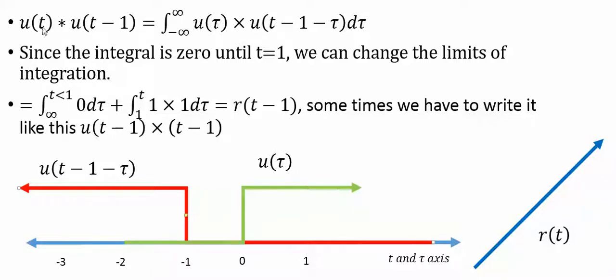Let's do the convolution of a ramp with a delayed ramp. So here's the convolution integral. We've got u(t) converted to u(τ) and u(t-1) converted to u(t-1-τ) dτ.